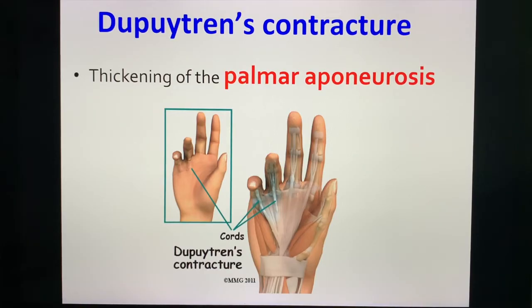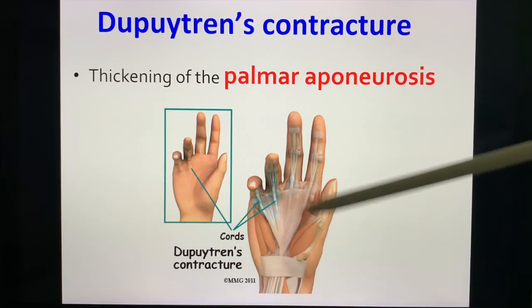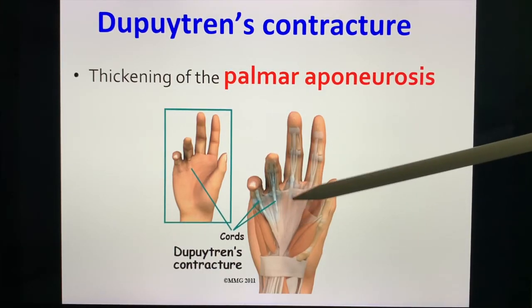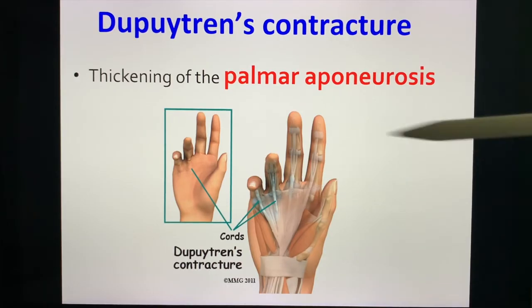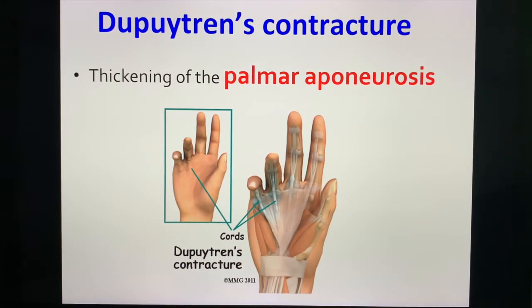We also have Dupuytren's contracture, which is the thickening of the palmar aponeurosis. Don't forget: Dupuytren's contracture is usually seen in uremia.